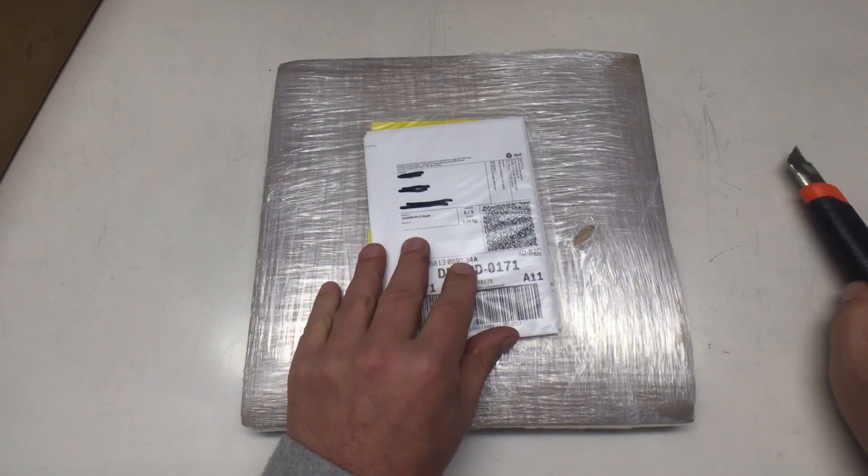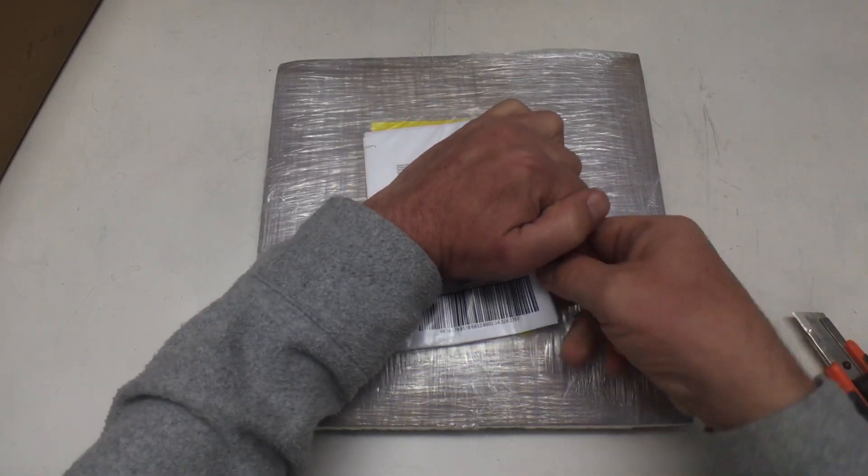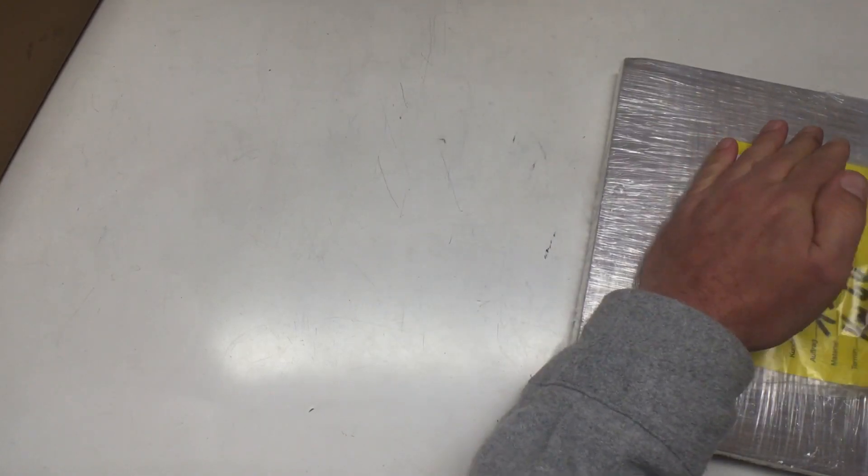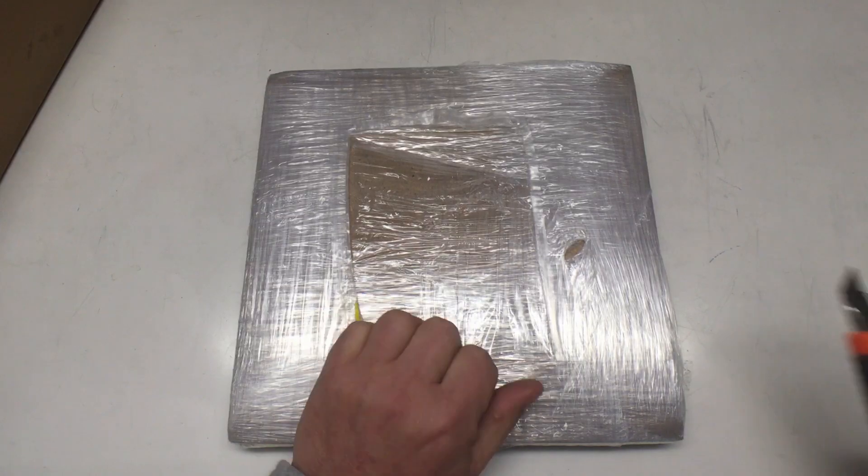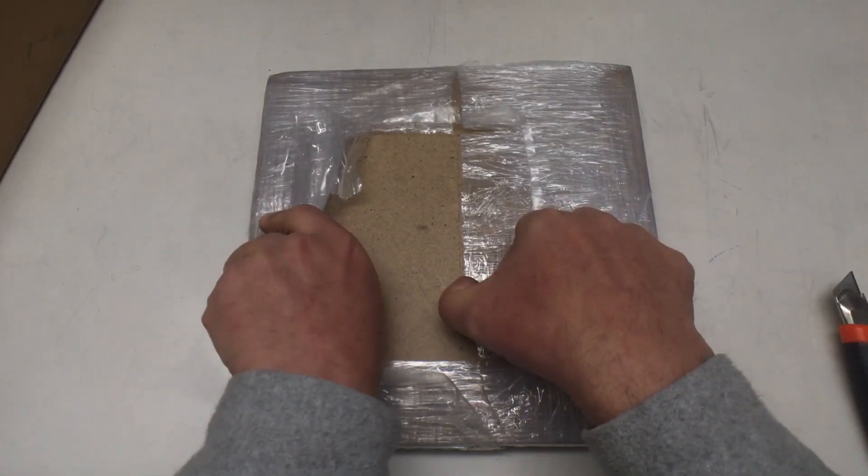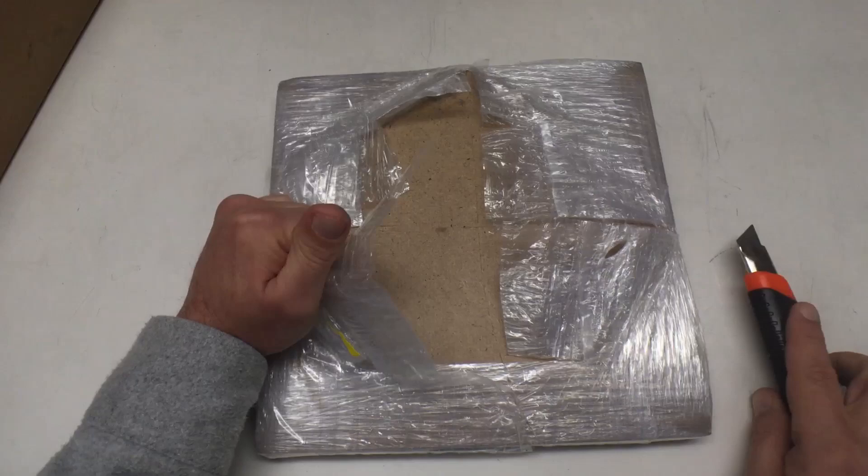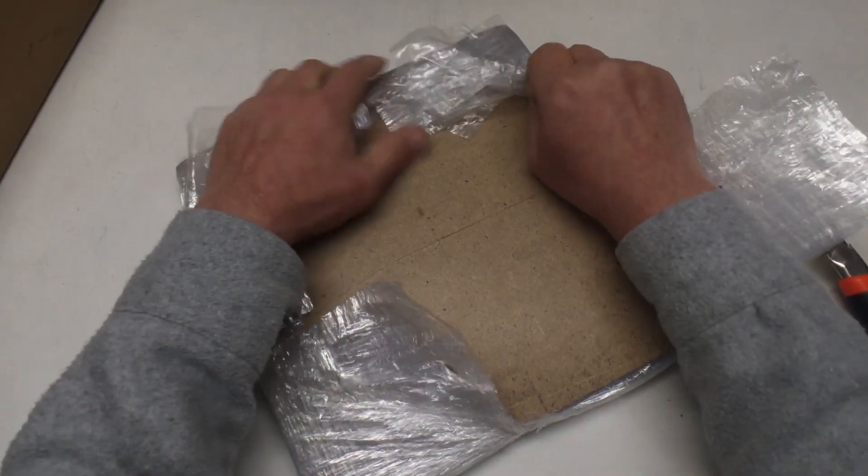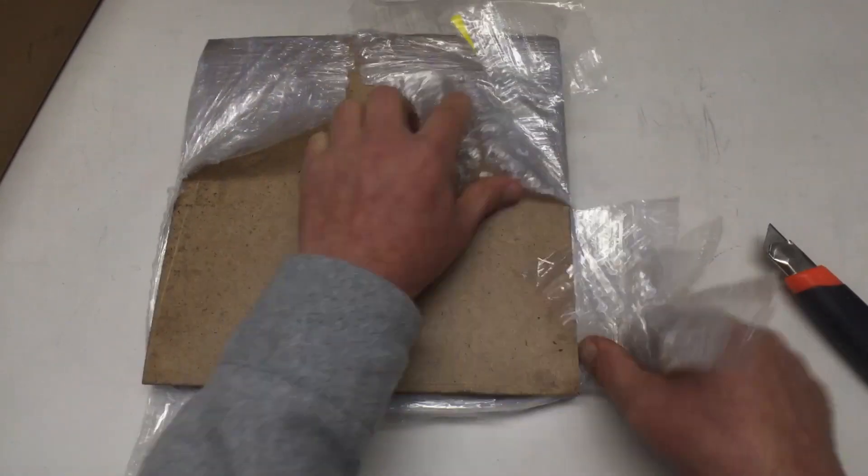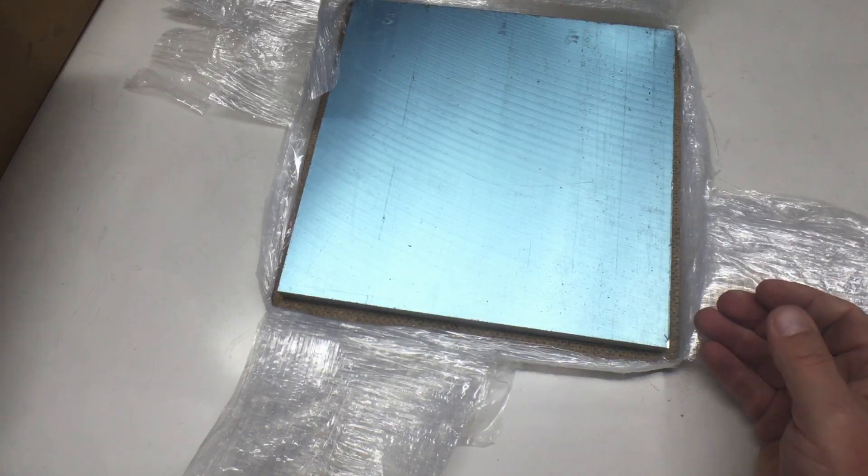And last but not least, let me first remove the shipping information here. Sorry for the cut but that was getting too fiddly. This is obviously wood, shouldn't be wood. Ah, very well packed. So there's a wooden plate here. We're getting closer. Okay, and ah, there it is.